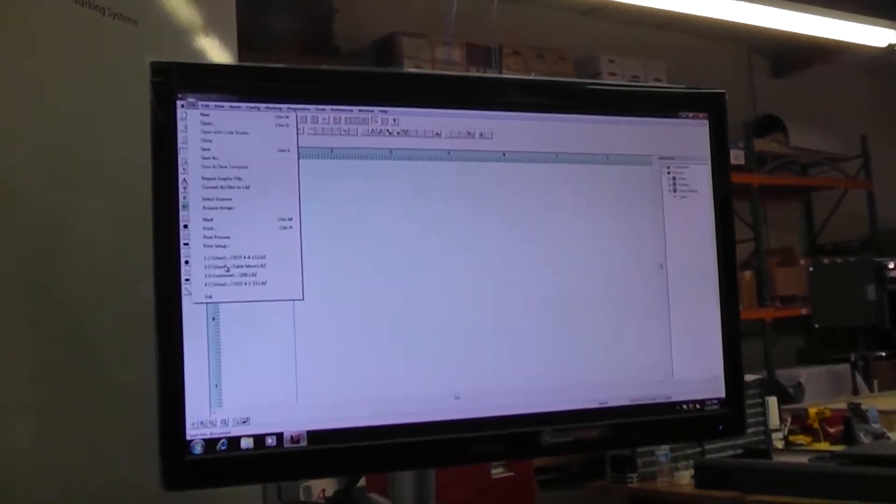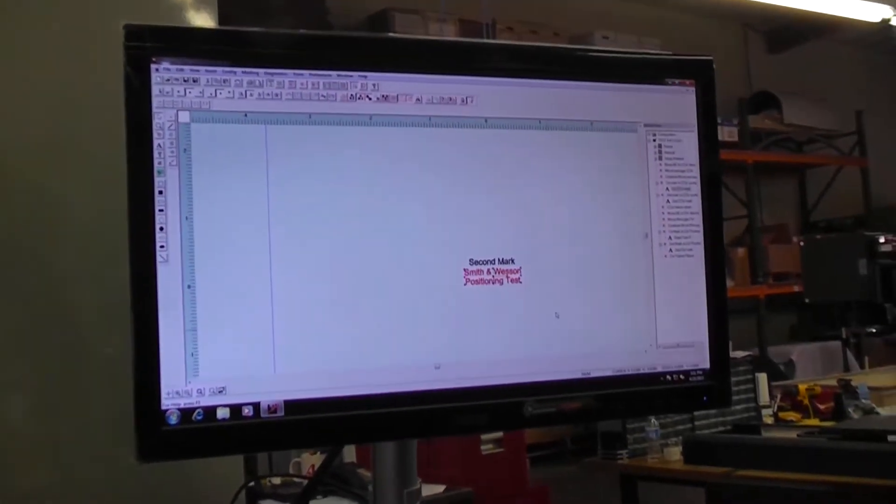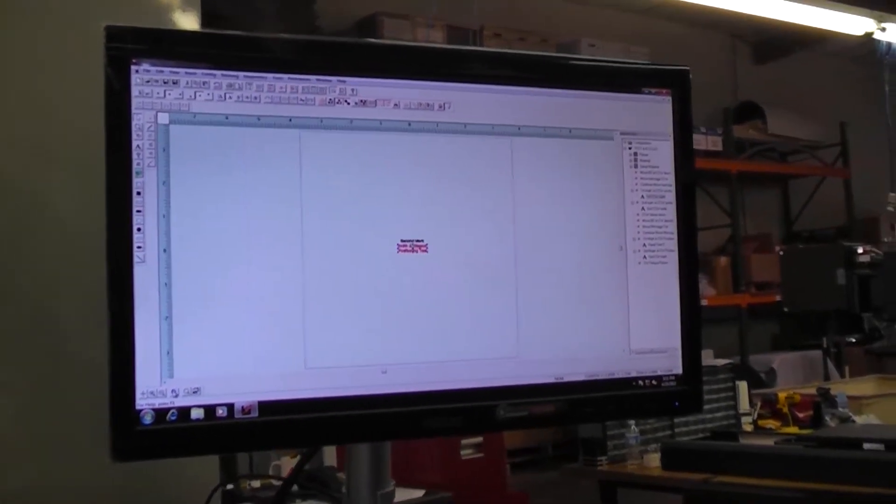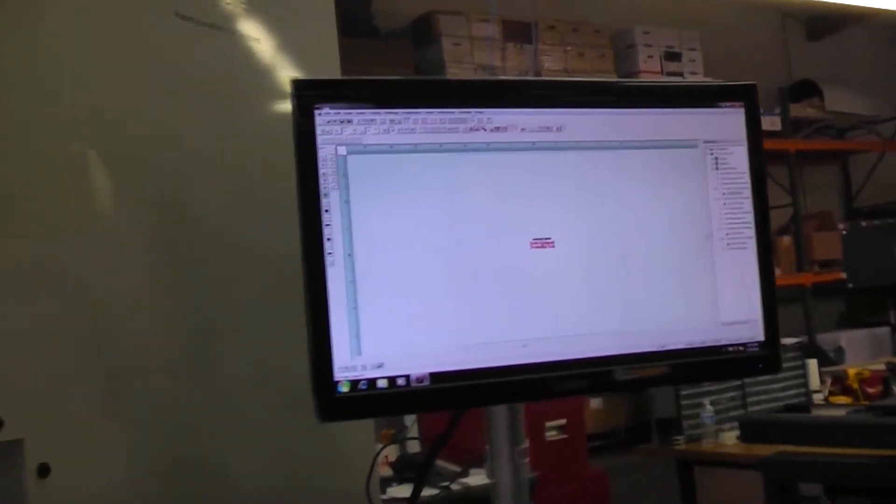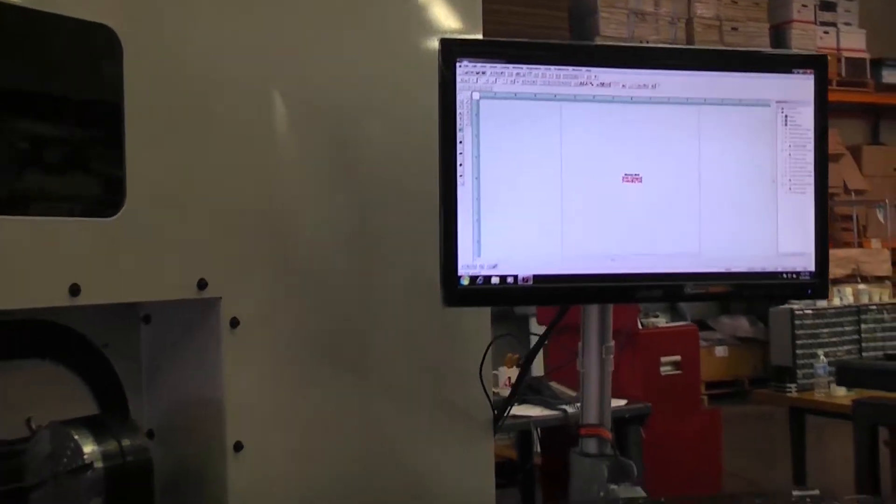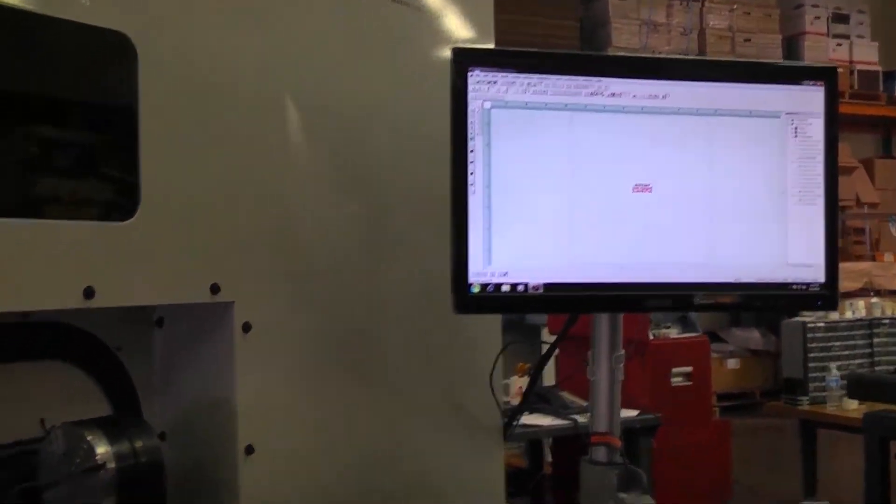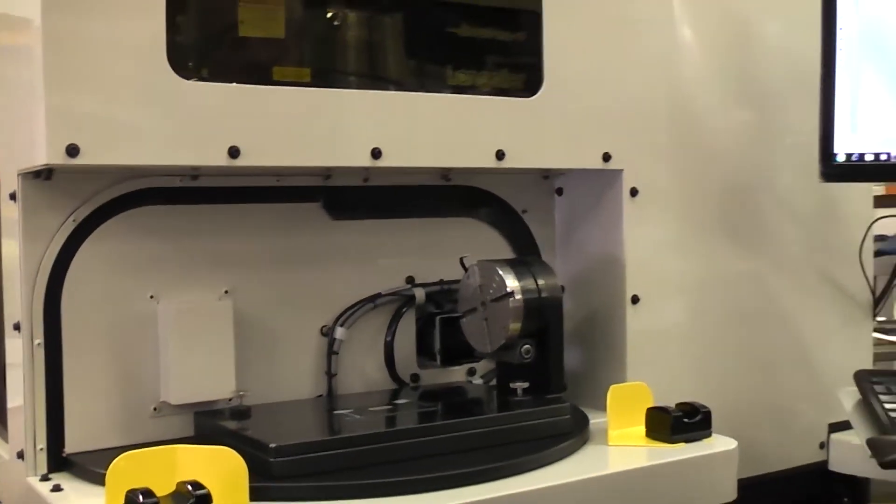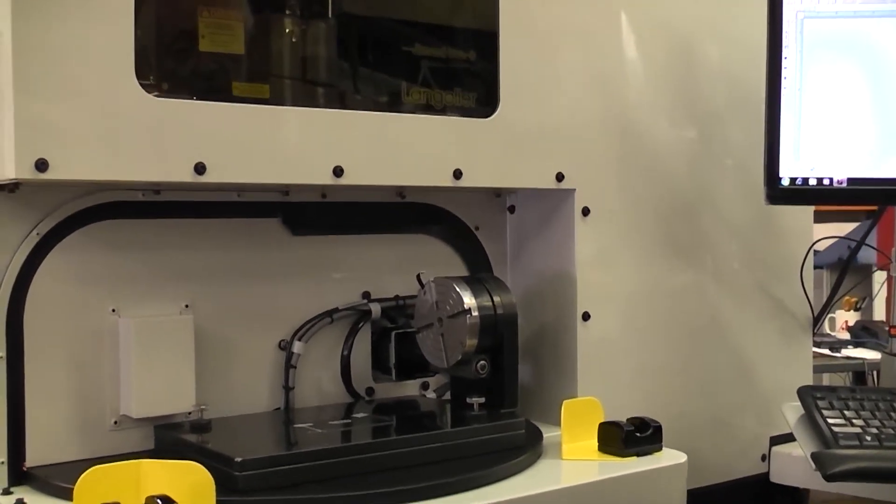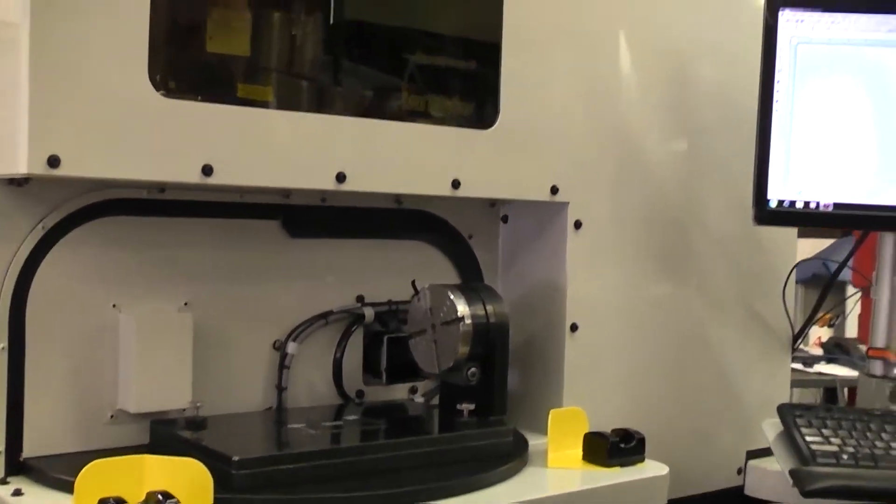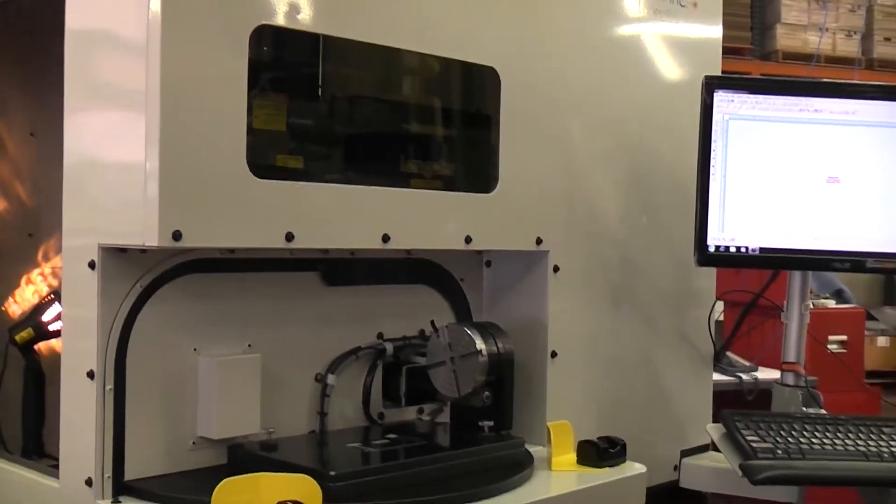That job is designed to mark a part on one side, flip the part 180 degrees, mark the back side of the part, return the part to the load position where a freshly loaded part can be marked. That sequence continues until the batch of parts is run.